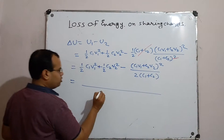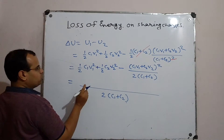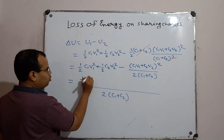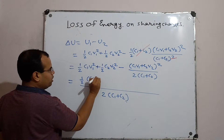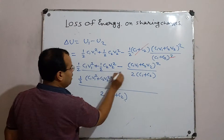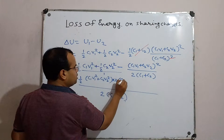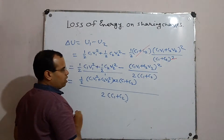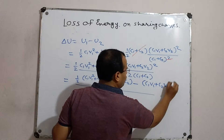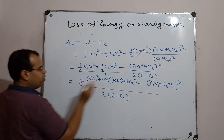Now taking twice (C1 plus C2) as the LCM, this twice (C1 plus C2) is multiplied by 1 by 2 divided by 2. You can see that this 2 and this 2 cancel.